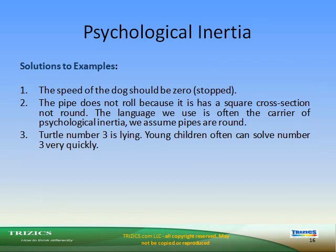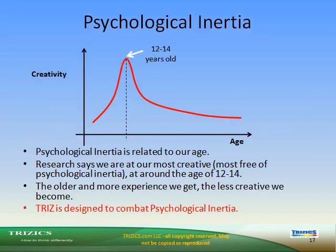Solutions: In example 1, the speed of the dog should be 0 — stopped. In example 2, the pipe does not roll because it has a square cross-section and is not round. The language we use is often the carrier of psychological inertia — we assume pipes are round. In example 3, Turtle 3 is lying. Young children often solve number 3 very quickly. Research shows we are most creative, most free from psychological inertia, around age 12 to 14. TRIZ is designed to combat psychological inertia.